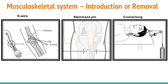K-wire is typically implanted on the elbow and small joints like fingers and toes. The physician will prep, drape, and anesthetize the patient, then drill the wire into the defected area, and confirm proper alignment using radiological images.